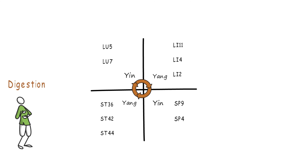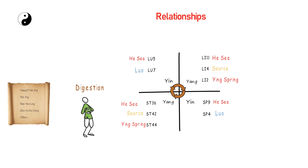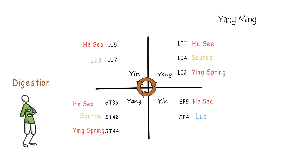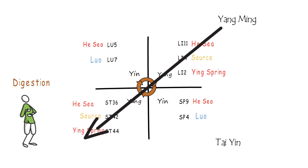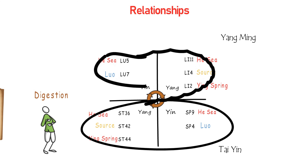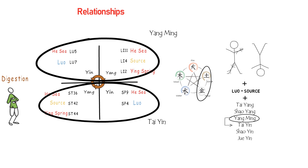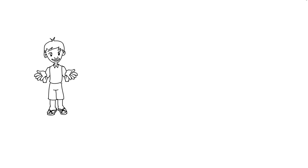In this example, I selected the He-Sea and Spring points, and we can also add luo-source points. Do you think a treatment like this is able to move Qi and be nourishing at the same time? Feel free to comment below. The relationships do not end here — in this simple example we have channel pairs, Yang Ming and Tai Yin relationship according to six levels, five element relationships of earth and metal, five element relationship of mother and child, and a point selection with strong Qi dynamics. The foundation of all this? Yin and Yang.